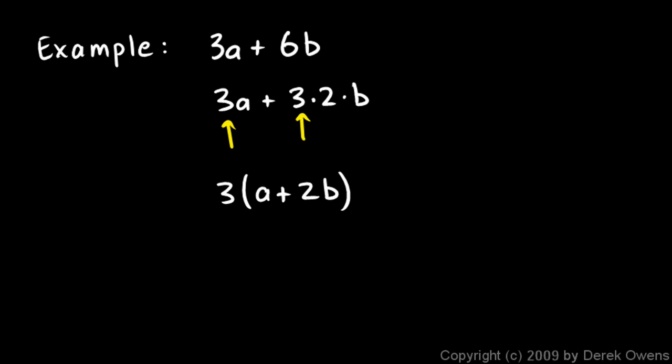And you can check this. You can always check your factoring by multiplying. If I multiply the 3 times the a, I get 3a, and then I have my plus sign, and then I multiply the 3 times the 2b, and that gives me a 6b. And you can see 3a plus 6b, that's my original problem. So my answer here, 3 times (a plus 2b), is in fact mathematically equivalent to this.